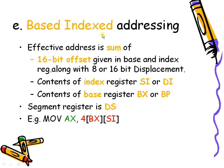In based indexed addressing mode, both a base register and an index register are used along with a displacement. For example, in MOV AX, [BX+SI+displacement], the values of SI and BX and the displacement are all added together and treated as an address, and the content at that address is copied into AX.